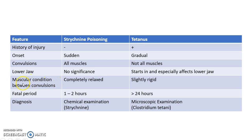Coming to the muscular condition between convulsions, in case of Strychnine poisoning the muscles will be completely relaxed between convulsions, whereas in case of tetanus the muscles will be slightly rigid between convulsions.